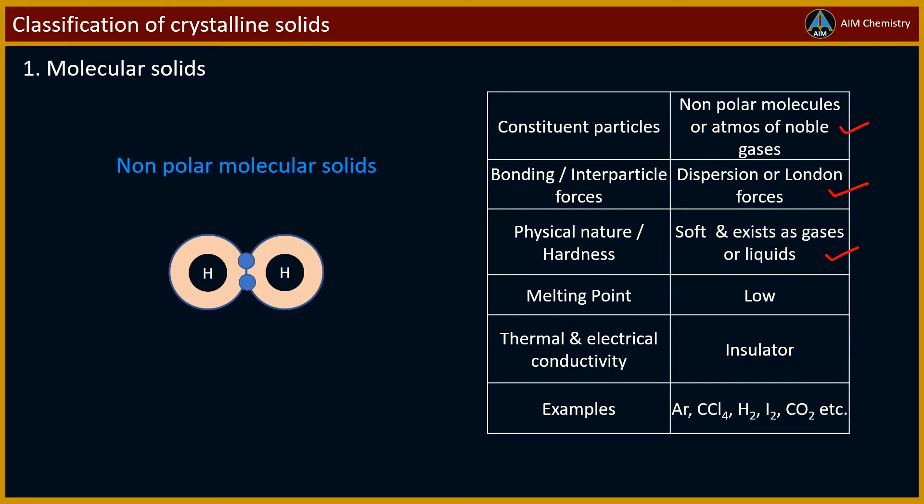That is, they have low melting point. They are non-conductors or insulators. Some examples of these solids are argon, CCl4, H2, I2, CO2, etc.